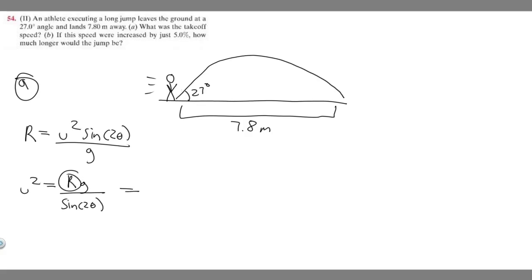We know R is the distance traveled, which is 7.8 meters. We're multiplying it by the force of gravity, and in this case you want to keep gravity positive, so it's 9.8. Divide by the sine of 2 times our angle, 27 degrees. So 2 times 27 is 54, so it's the sine of 54.